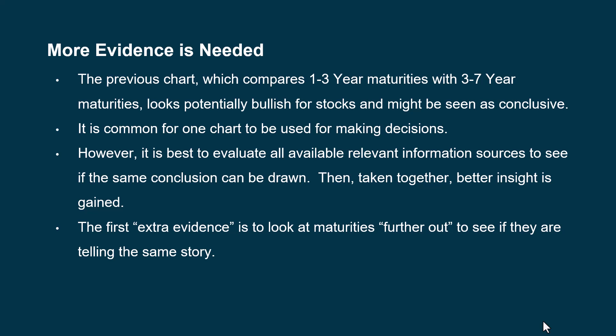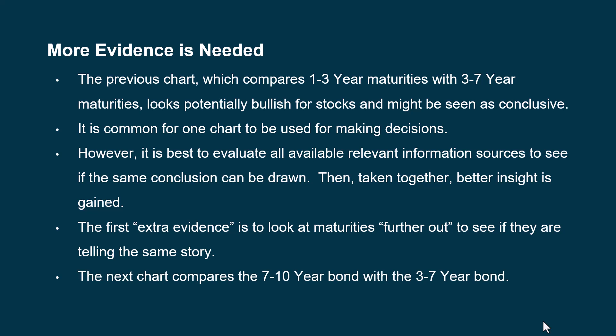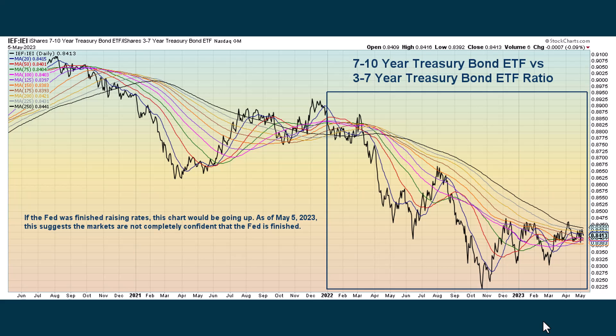The first extra evidence is to look at maturities further out to see if they are telling the same story. In that first chart, we looked at the 1–3 year compared to the 3–7 year. Now the next chart compares the 7–10 year bond with the 3–7 year bond. This one looks a little different. The idea is that if the Fed has finished raising rates, this chart should be going up. As of the close on May 5th, 2023, the markets are not completely confident that the Fed has finished. We would have seen this chart really going up when we hit the low back in October.